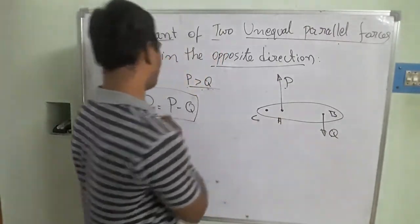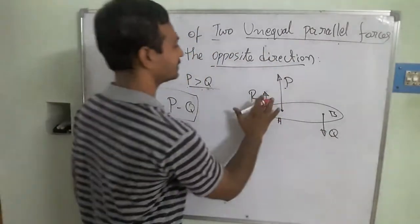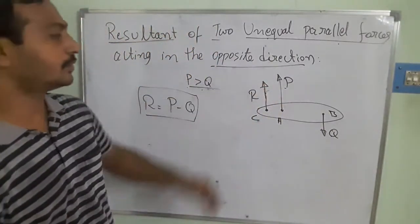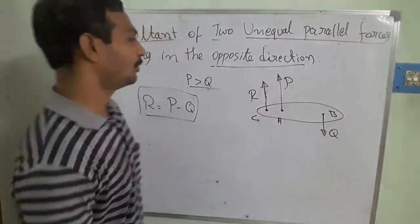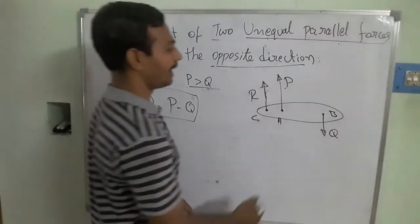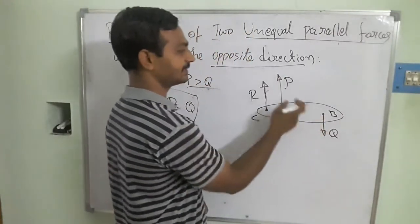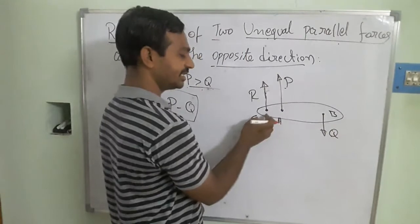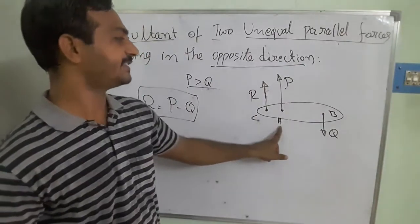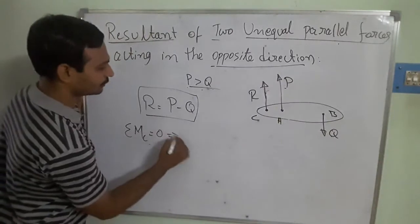I am taking point C as the position of the resultant. The resultant moves in the direction of the maximum force P. To find this position, I take moments about point C. The distance from C to force P is AC, and the distance from C to force Q is BC.